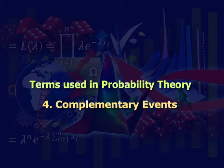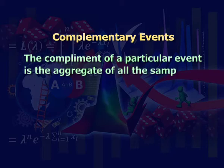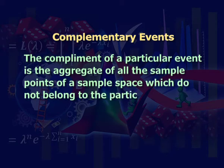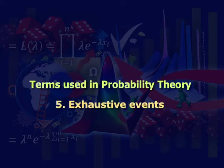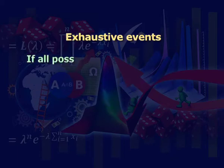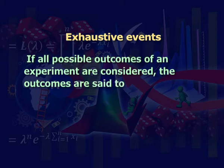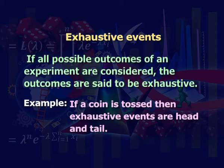Fourth: complementary events. The complement of a particular event is the aggregate of all the sample points of a sample space which do not belong to the particular event. For example, if a coin is tossed, then head is the complementary event of tail. Fifth: exhaustive events. If all possible outcomes of an experiment are considered, the outcomes are said to be exhaustive. For example, if a coin is tossed, then exhaustive events are head and tail.